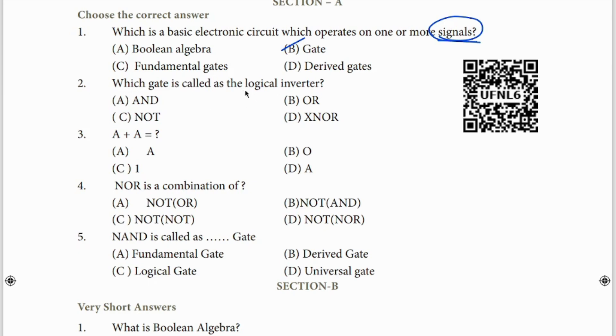Second question: logical inverter. Question clue is 'inverter.' Take inverter as your clue. Does your house have an inverter? If yes, take that. If your house has no inverter - 'not' - then it is NOT.